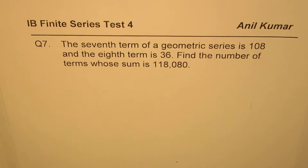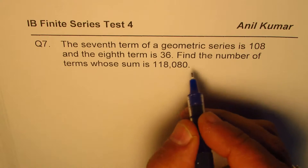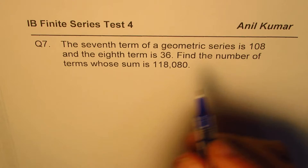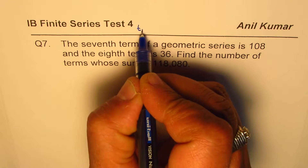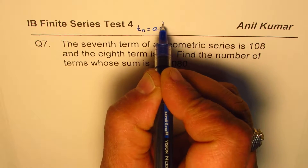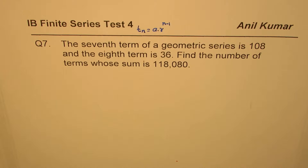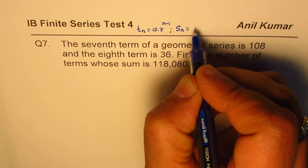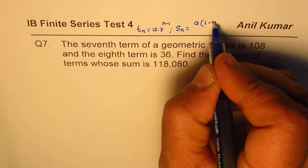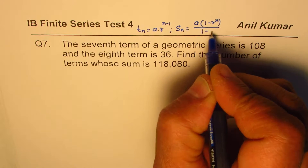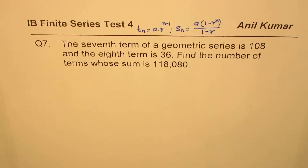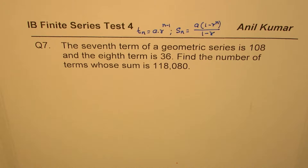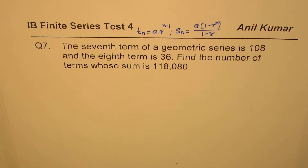Let me also give you the formulas which we may be required to solve this question. For a geometric series, the nth term is t(n) equals a times r to the power of n minus 1. The sum of n terms is s(n) equals a times (1 minus r to the power of n) divided by (1 minus r). You may use these formulas to solve the question. A calculator is also permitted.